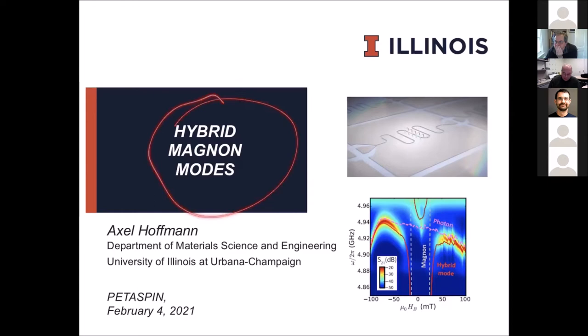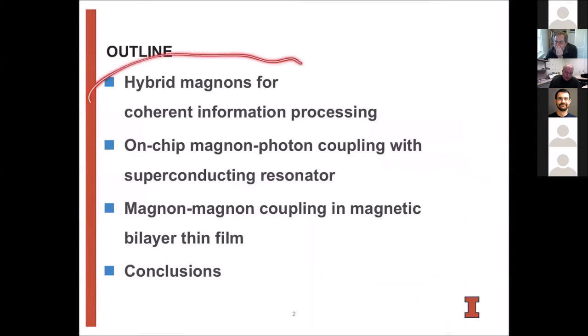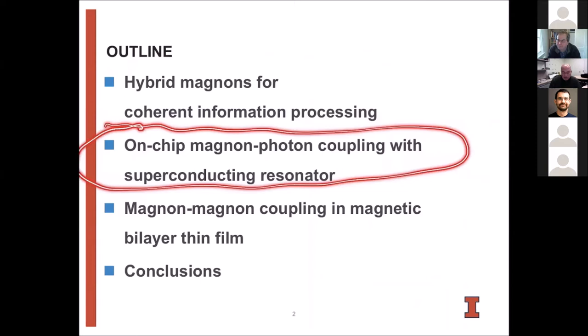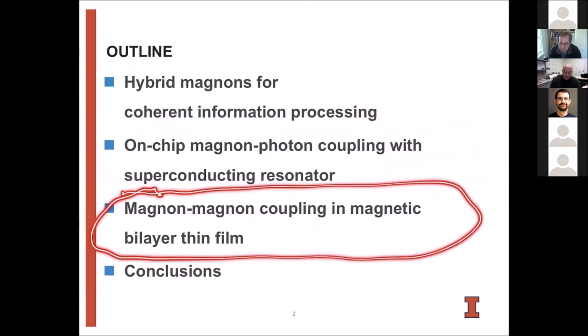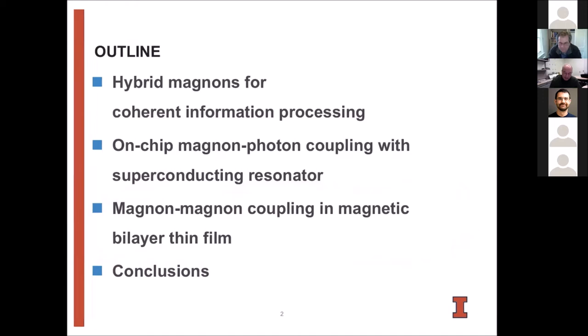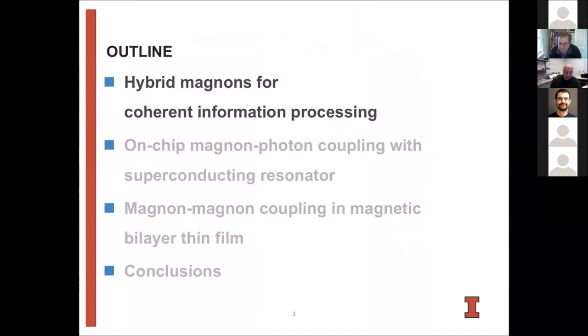So here's briefly what I want to tell you about. I want to tell you how hybrid magnon modes may be useful for things like coherent information processing, and then I will talk about how we can use an on-chip geometry to look at magnon-photon coupling. I'll also tell you about magnon-magnon coupling in bilayer films and some new features that we can see there, and we'll have a few brief conclusions in the end.